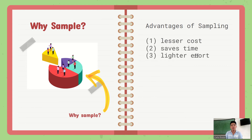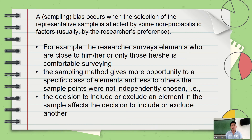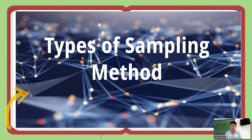The advantages of sampling are lesser costs, saves time, and lighter effort. The disadvantages include the occurrence of probable errors and the possibility of bias. Those are the main advantages and disadvantages of the sampling method.